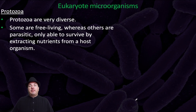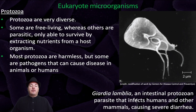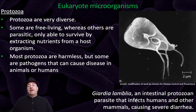Continuing with the eukaryotic microorganisms, we have the protozoa, which are very diverse. Some are free-living, whereas others are parasitic, only able to survive by extracting nutrients from a host organism. Most protozoa are harmless, but some are pathogens that can cause disease in animals or humans. For example, Giardia is an intestinal protozoan parasite that affects humans and other mammals, causing severe diarrhea.